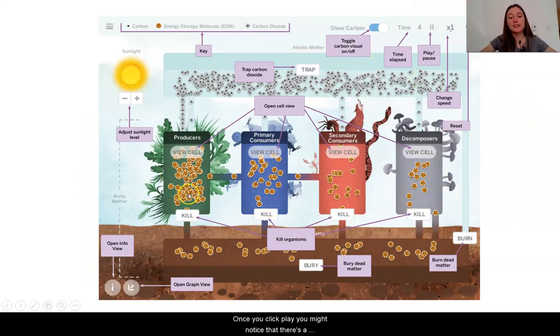Once you click play, you might notice that there's a whole bunch of things going on. Now, it's really helpful to make sure you understand what these different symbols are by looking at the key. The energy storage molecules are these orange kind of disks with these black dots in them. The carbon dioxide is shown as these gray diamonds with these black dots as well. The black dots are something called carbon.